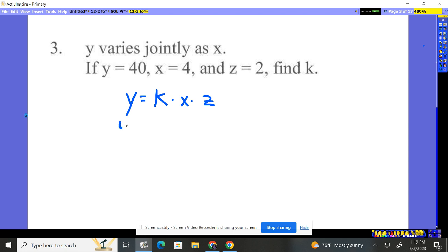So y is 40. Trying to find the constant. x is 4. z is 2. So I have 40 equals that constant times 8. I divide by 8. The constant in this case is 5.